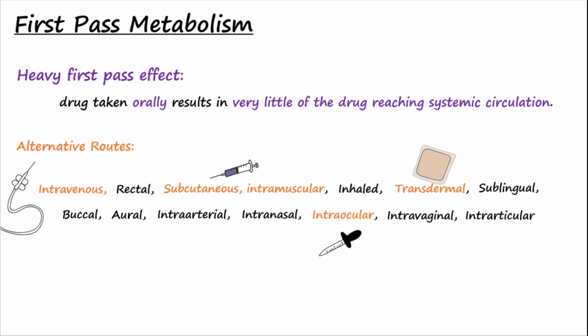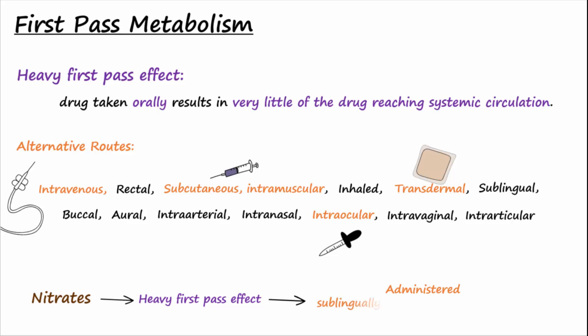A good example of a drug class that has a heavy first pass effect after oral administration are nitrates, used to treat chest pain also called angina. Because nitrates are metabolized by the liver extensively on first pass, they must be given by an alternative route like sublingually, topically, or intravenously.